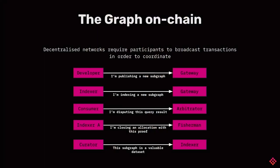So what does the graph look like on chain? There are several ways a participant can participate on the graph. They all publish or broadcast a transaction on a smart contract that announces certain actions they would like to do. A subgraph developer can publish a subgraph and specify its schema. An indexer can send a transaction that allocates a certain amount of stake, announcing they are going to provide indexing and data availability for a certain subgraph. Consumers can have billing on the smart contract and also open up disputes for certain queries.